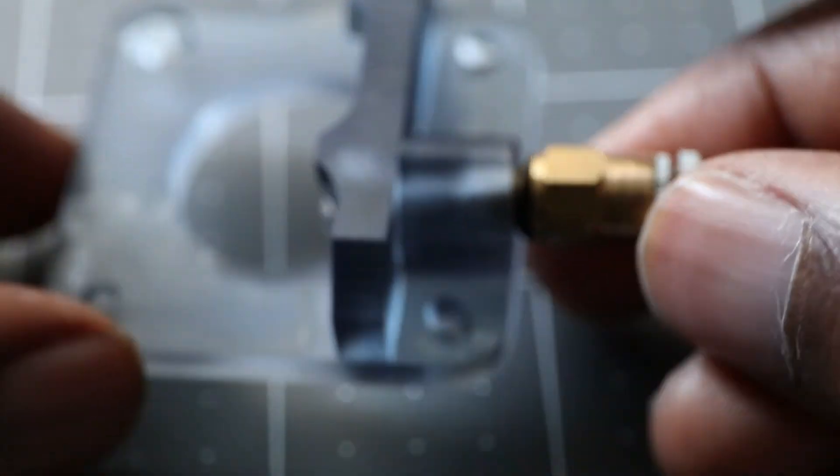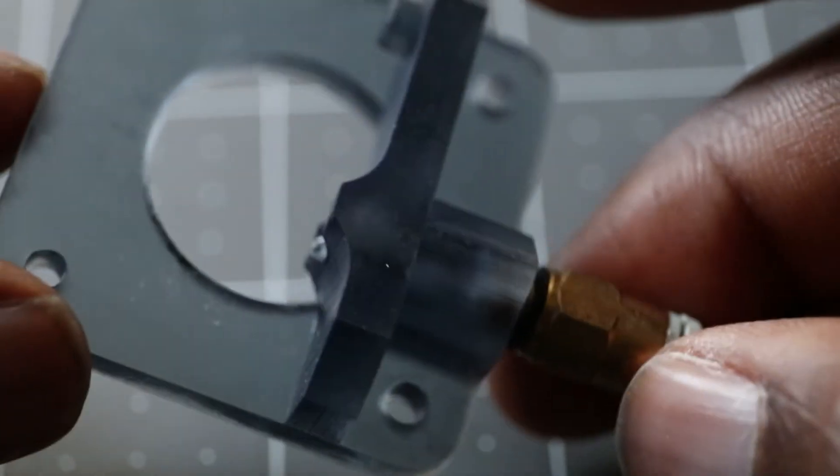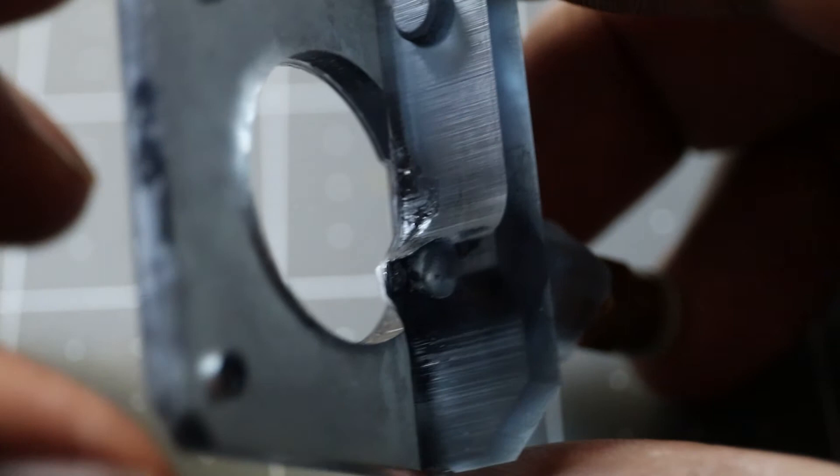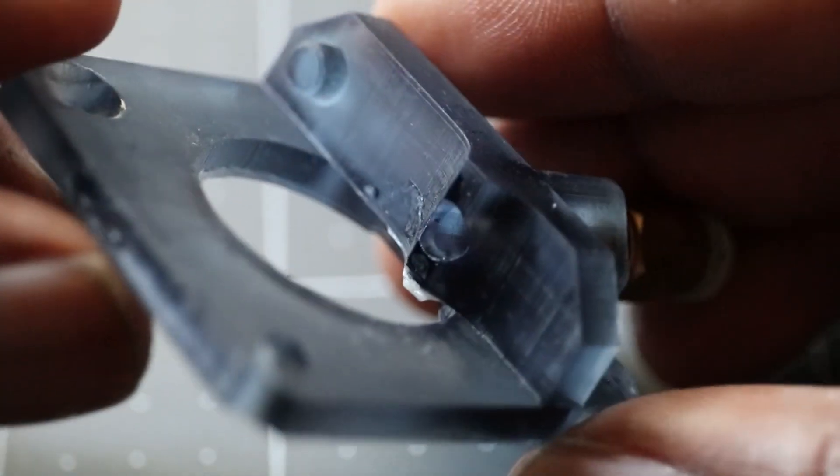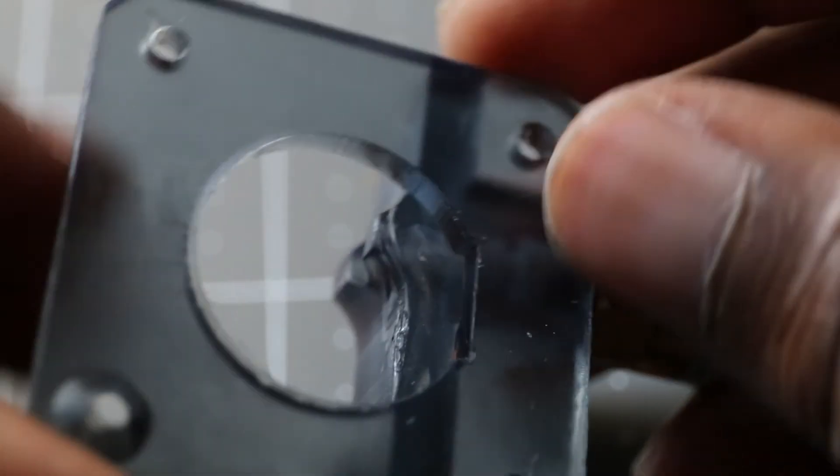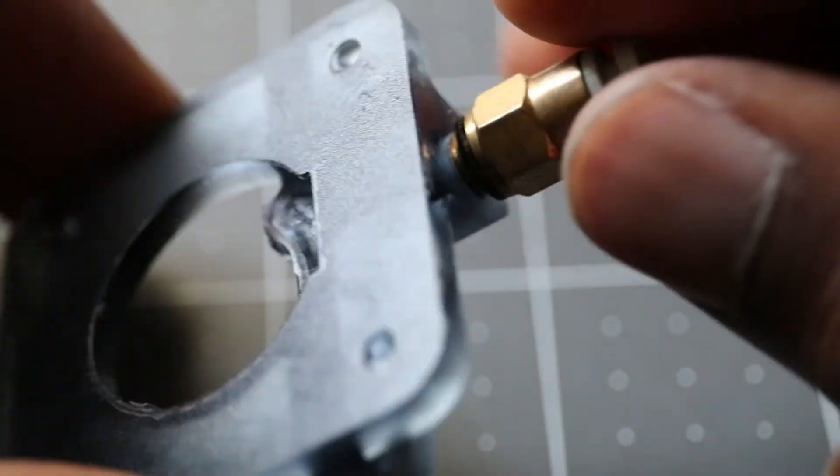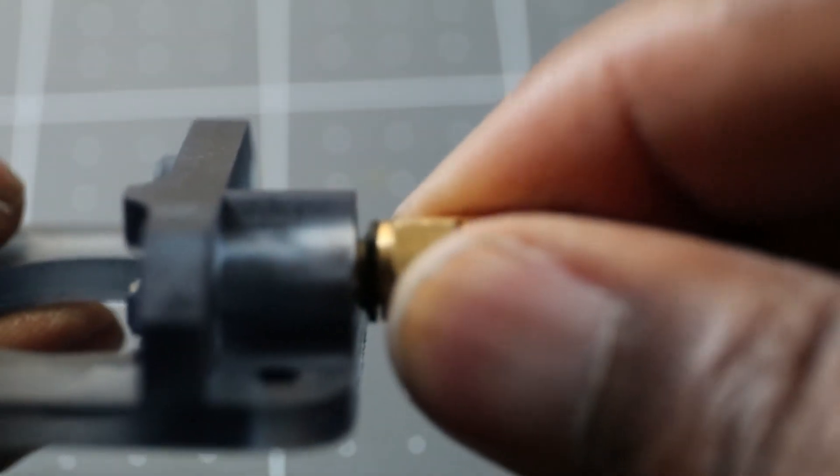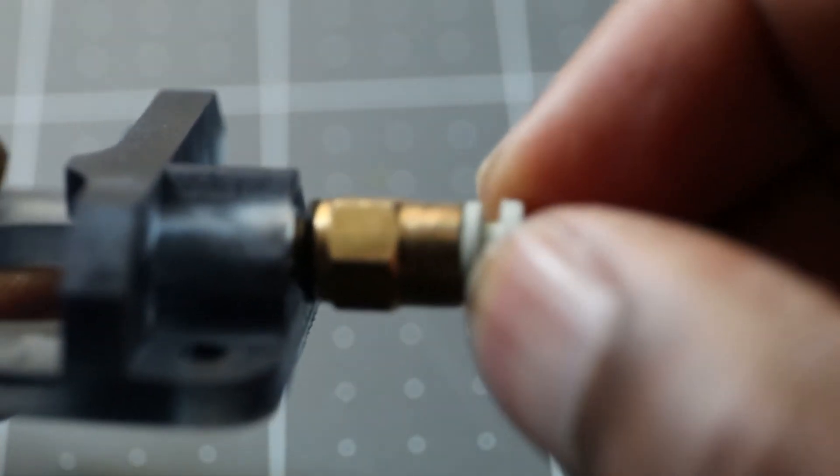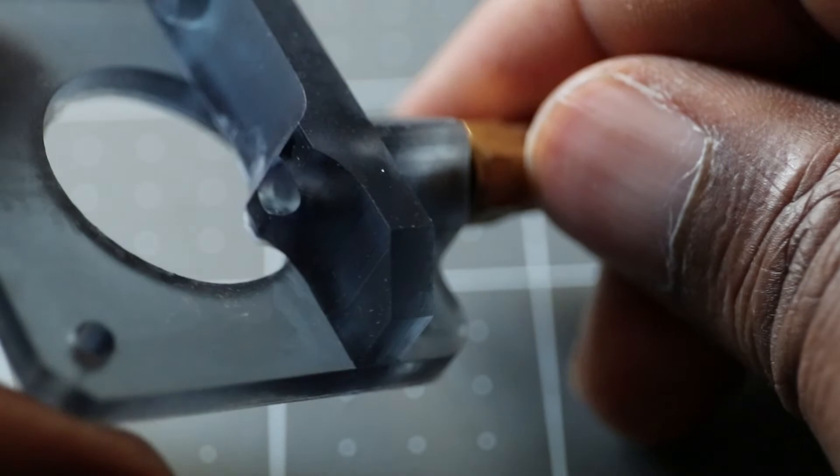And then here's a close-up look at the flexible extruder part for the Elegoo Mars. This print impressed me because the overhang printed really clean. I was really impressed by that. Also, the coupling threaded into the resin really easy, threaded in the first try. I tried to do the same print out of Siraya Tech Fast with no luck.